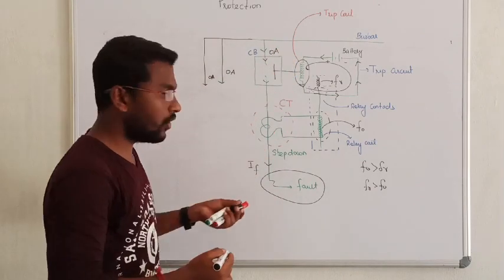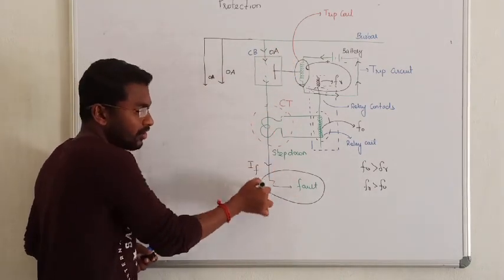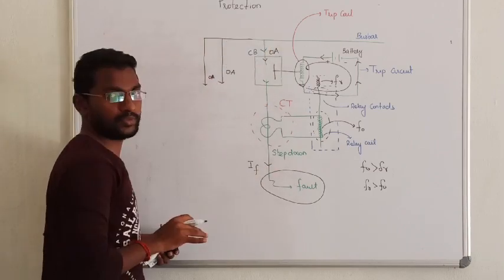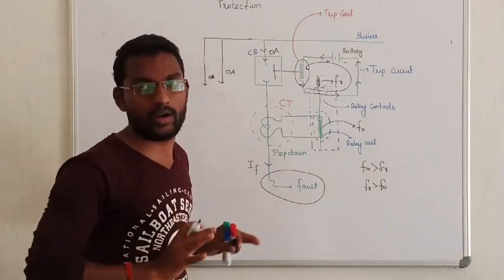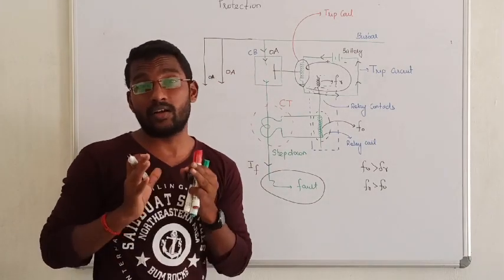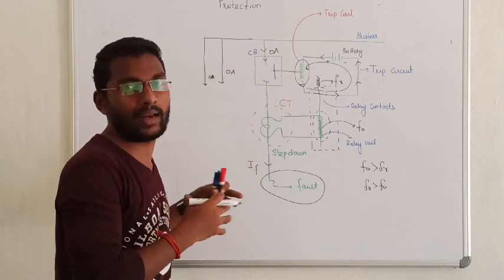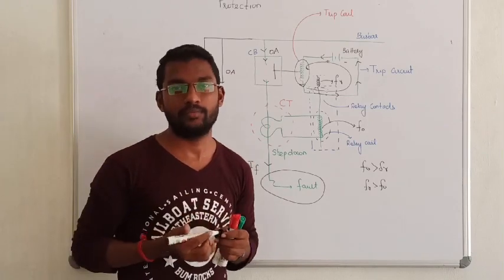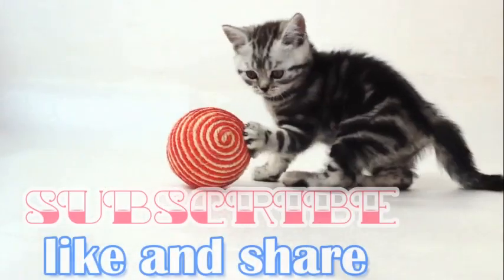That is how we are isolating the fault zone. If you are in the fault zone, it will be disconnected from the transmission line. Basically, this is how the circuit breaker operates. So in the next video, we will look at important terms — all mechanical terms related to the circuit breaker. Okay, bye.